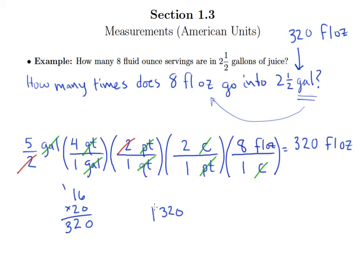So 320 divided by eight. Eight goes into 32 exactly four times, drop the zero down, eight goes into zero, zero times. And so what we have here is that there are 40 eight fluid ounce servings in the two and a half gallons of juice.